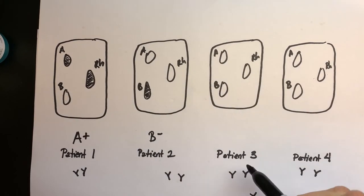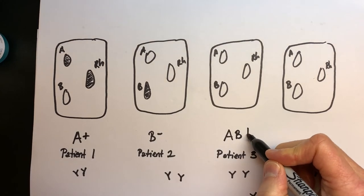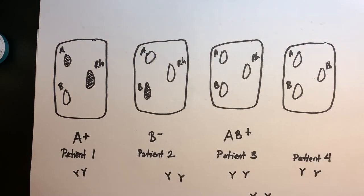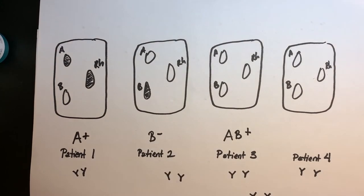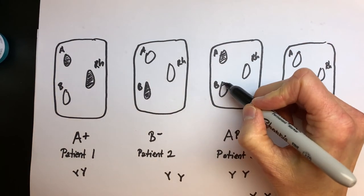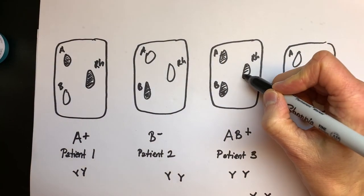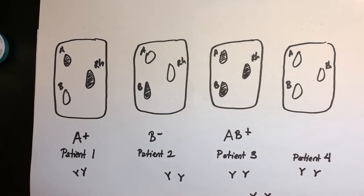Let's look at patient number three. Remember they were A, B positive. So what would I shade in for patient number three? I would shade in the A, because there's my A. I would shade in my B. And I would shade in the positive, because they are positive for RH.